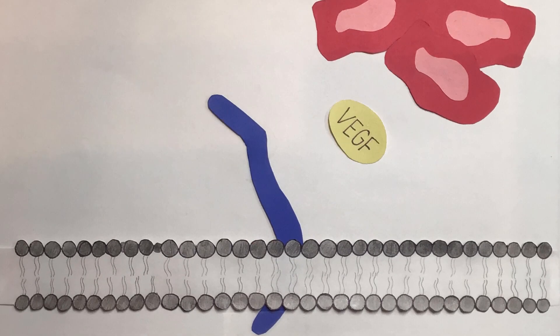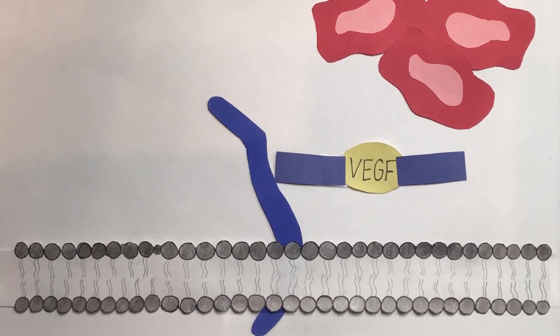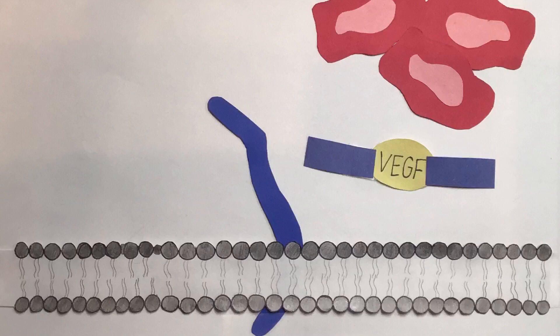That way, when VEGF is released by tumor cells, bevacizumab prevents the VEGF protein from binding to VEGF receptors. The VEGF blockade restricts angiogenesis and stops the tumor from growing.